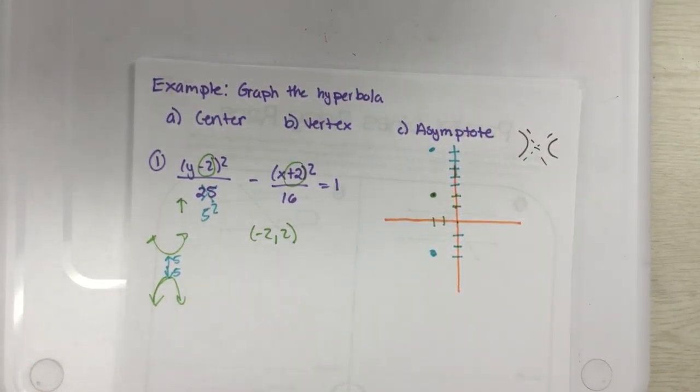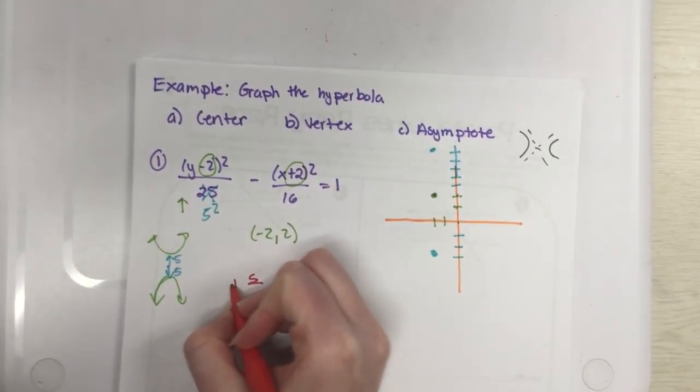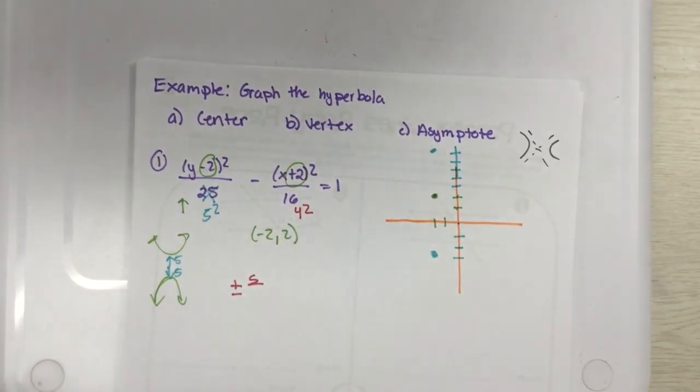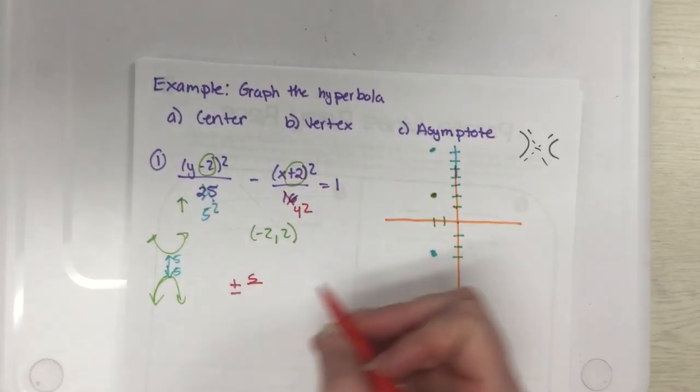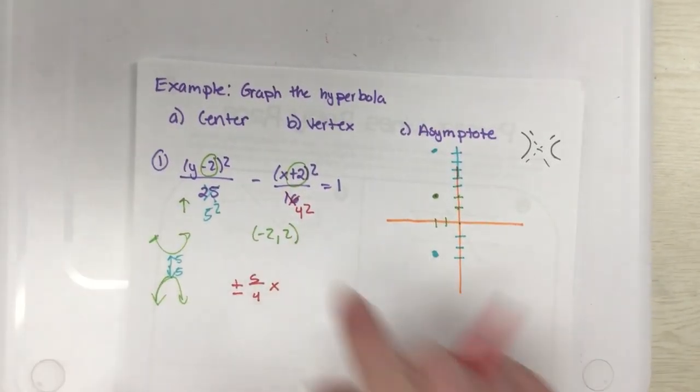The nice thing is we already know where our center is, it's right there. It's already at my first point of my asymptote. If you're plugging that into the formula, remember it's rise over run, so my rise is 5.